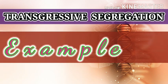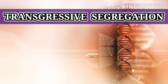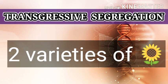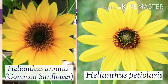Now we will see the examples one by one and how they prove transgressive segregation. Let's start with Risberg's sunflower. Risberg used sunflowers to show the transgressive segregation of parental traits. He took two sunflowers: one is Helianthus annuus and the second is Helianthus petiolaris. Helianthus annuus is the common sunflower and Helianthus petiolaris is a sunflower variety.